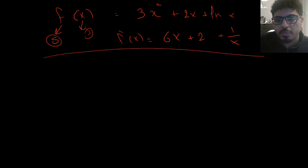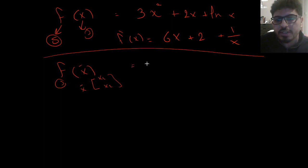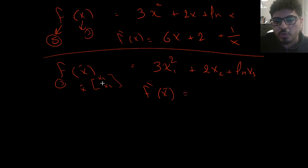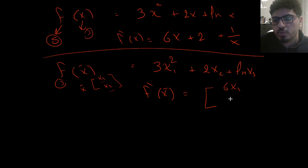Now let's take the second example: f is a scalar-valued function and x is multivariate — let's say x is the vector [x1, x2, x3]. So f(x) = 3x1² + 2x2 + ln(x3). Taking the partial derivative with respect to a vector of variables, the result will be a vector: [∂f/∂x1, ∂f/∂x2, ∂f/∂x3] = [6x1, 2, 1/x3].